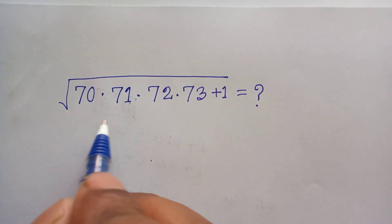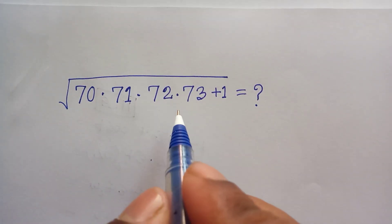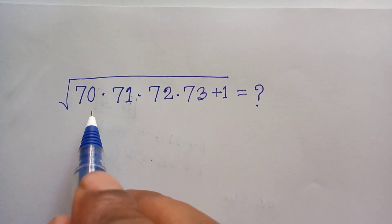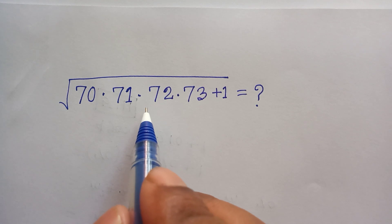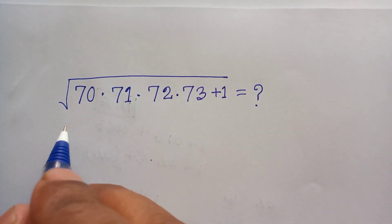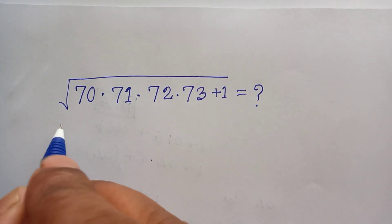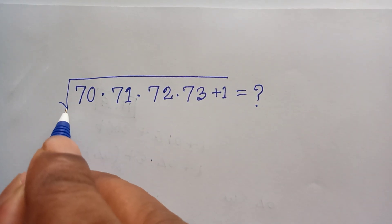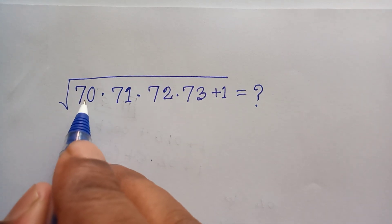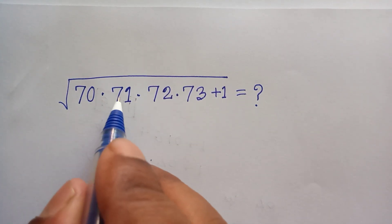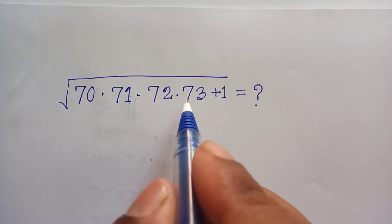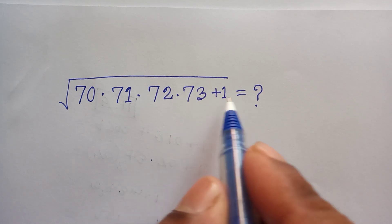Hi everyone, welcome. Let's solve this math problem — how to solve it correctly and easily without a calculator. We have: under square root of 70 times 71 times 72 times 73, plus 1.